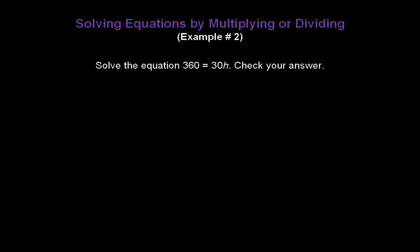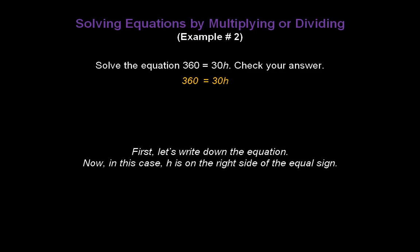Let's solve the equation 360 equals 30 times h and check our answer. First, write down the equation 360 equals 30 times h. Now, in this case, our h, or variable, is on the right side of the equal sign.